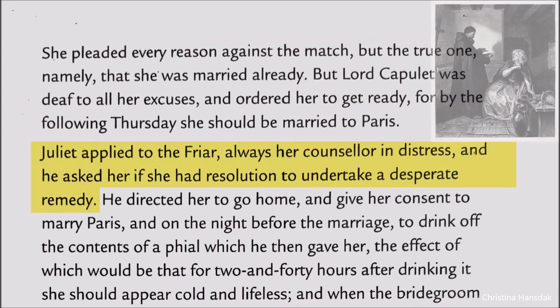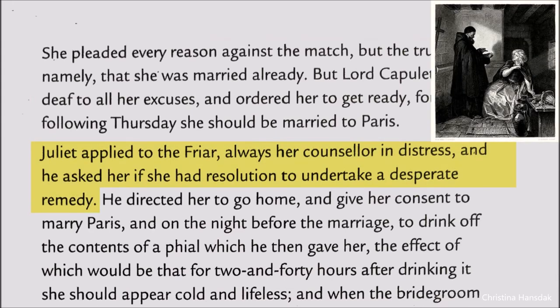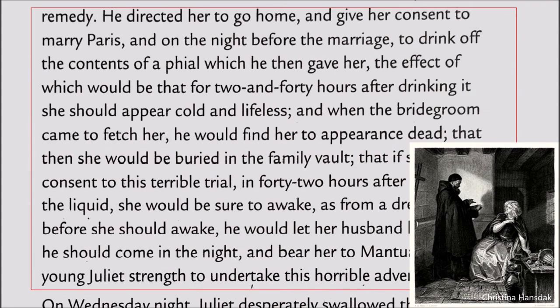Juliet was in distress. She went to Friar Lawrence and disclosed everything — that she had been told to give her consent to marry Paris. Then Friar Lawrence gave her a potion and told her it would take effect for 24 hours. After drinking it, she would appear cold and lifeless, and when the bridegroom came to fetch her, he would find her seemingly dead.